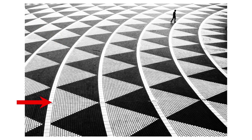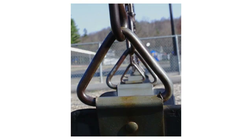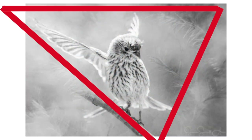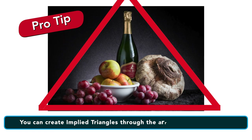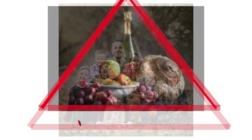The shape doesn't even have to be an actual triangle, because even a square or rectangular shape, when cropped, makes a triangle. Of course, this doesn't mean that you have to run around looking for triangular shaped objects to photograph to make your image interesting. Triangles can also be implied.